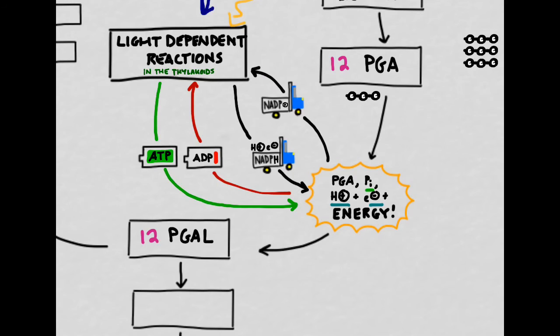When we have combined all of these ingredients together, we wind up with a total of 12 PGAL. Each PGAL has three carbons on it.